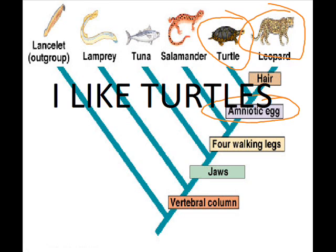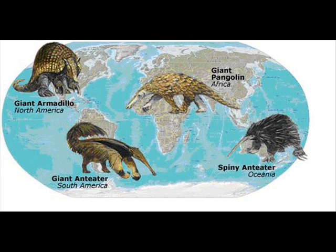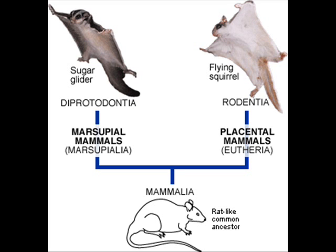Another important topic is convergent evolution and analogous features. Convergent evolution is when two organisms of different lineages evolve to form similar structures, like the flying squirrel and the sugar glider. These shared features due to convergent evolution are said to be analogous.